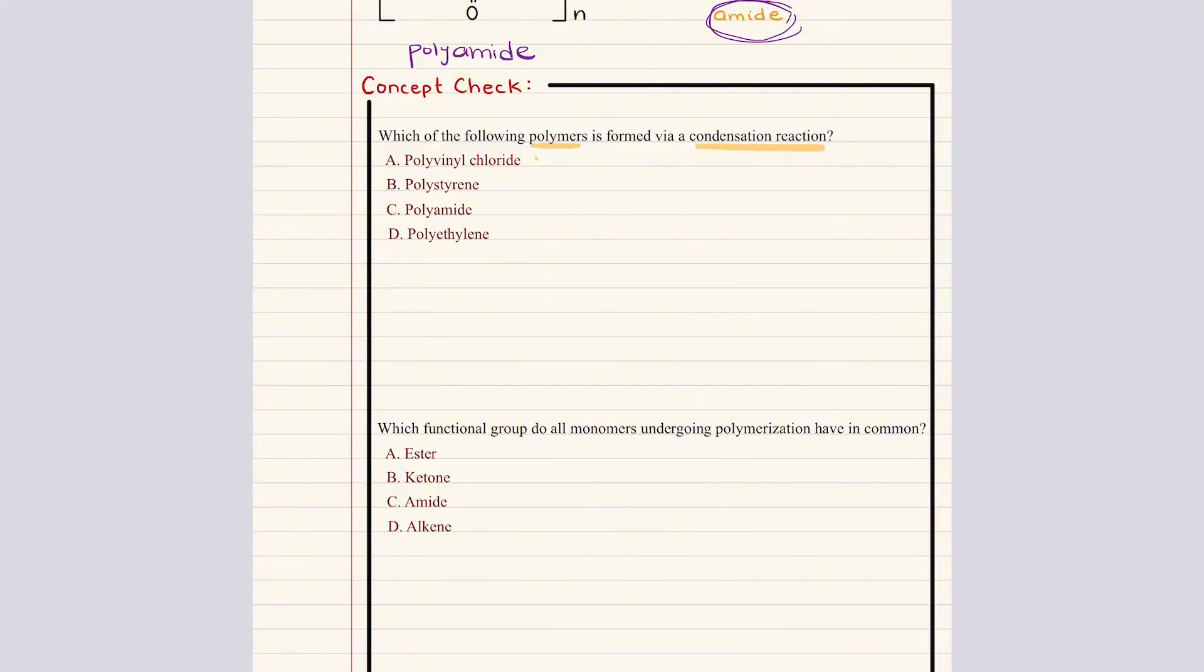The first question asks which of the following polymers is formed via condensation reaction? A says polyvinyl chloride, B says polystyrene, C says polyamide, and D says polyethylene. Here we want to remember what we just discussed. We said polyvinyl chloride, polystyrene, and polyethylene were all examples of addition polymers made from alkene monomers. The two condensation polymers we talked about were polyester and polyamide. So with that being said, the correct answer here is going to be C, polyamide.